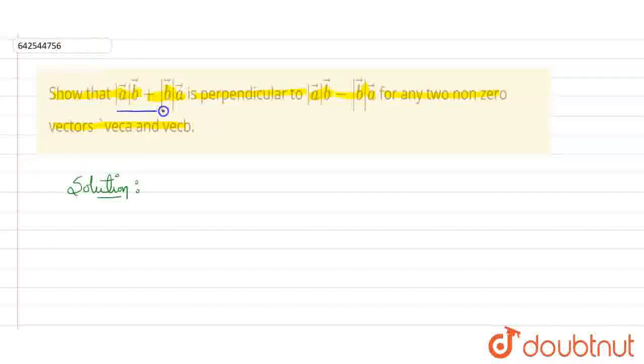So, in order to prove that these two terms are perpendicular to each other, what we will show is if their dot product is equal to zero, then we can prove that these both are perpendicular to each other. Let me write these terms.